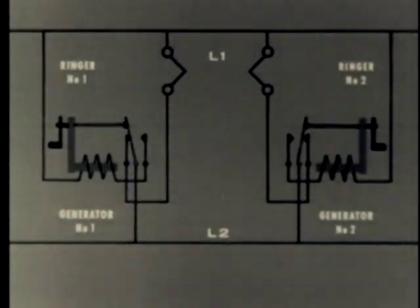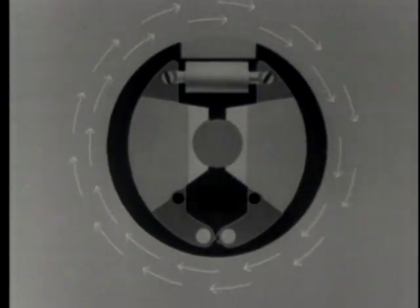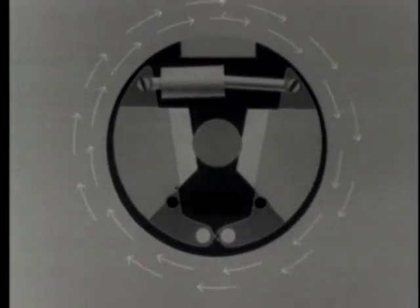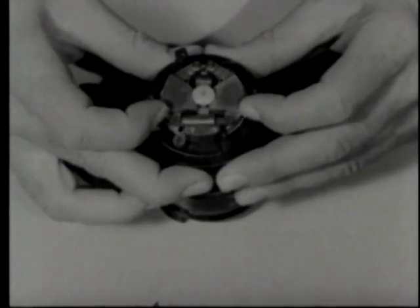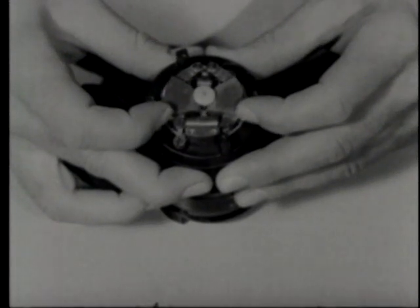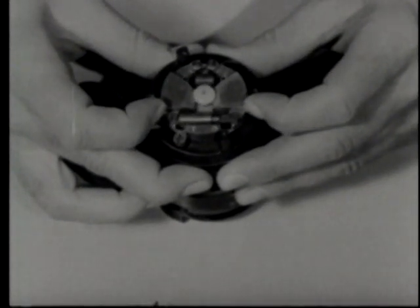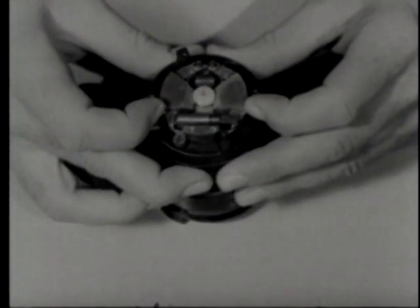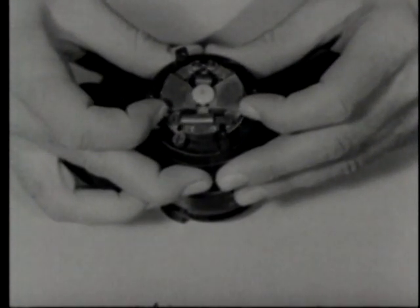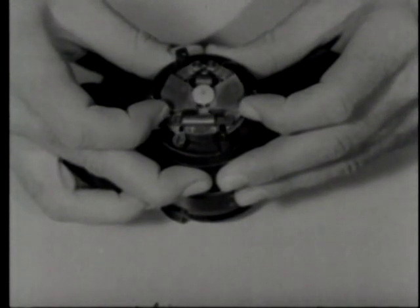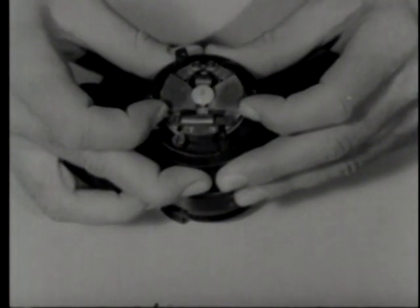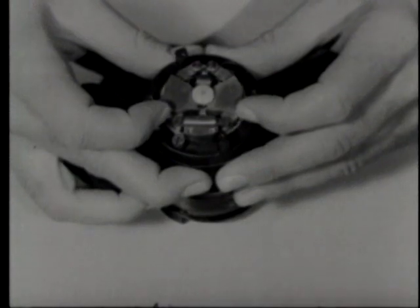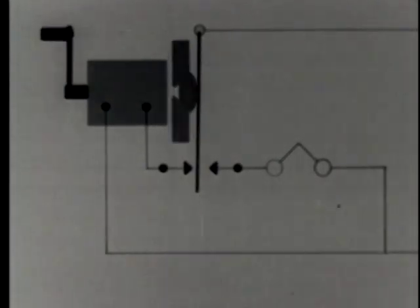How does the generator switch operate? A rotary action exerts a centrifugal force on the counterweights in the generator. As the counterweights are spread apart, a movable button drops down and makes contact with and closes the generator circuit. As the counterweights come together, the button raises and makes contact with and places the ringer on the line. This is how the generator switch works in the circuit.